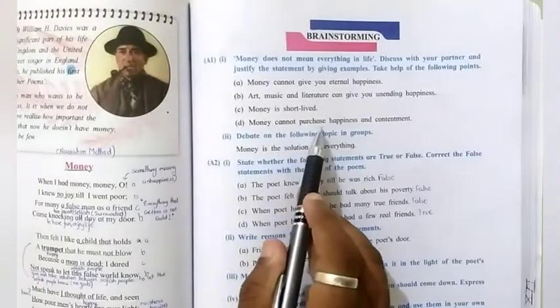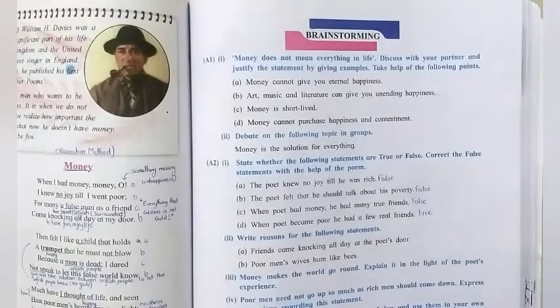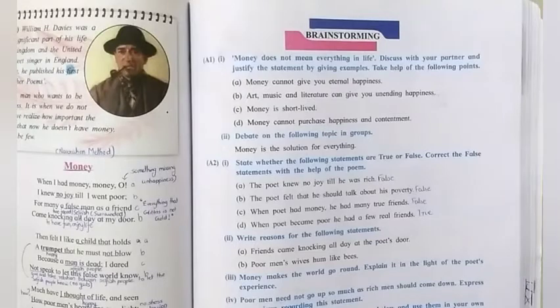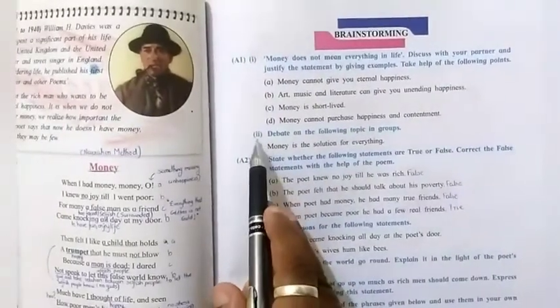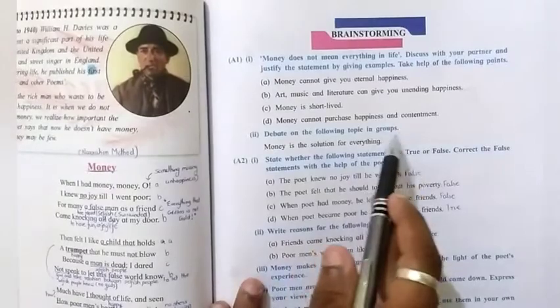Now, the next is D. Money cannot purchase happiness and contentment. That is, money cannot give you happiness and enjoyment in your life. We do not have peace in your life. See, the answer to this is that today we see many people around us who have loads of money but they don't have a family or they don't have close friends. Many a times people commit crimes or even do suicides just because they are rich but they are not happy. They don't have happiness and contentment in their life.